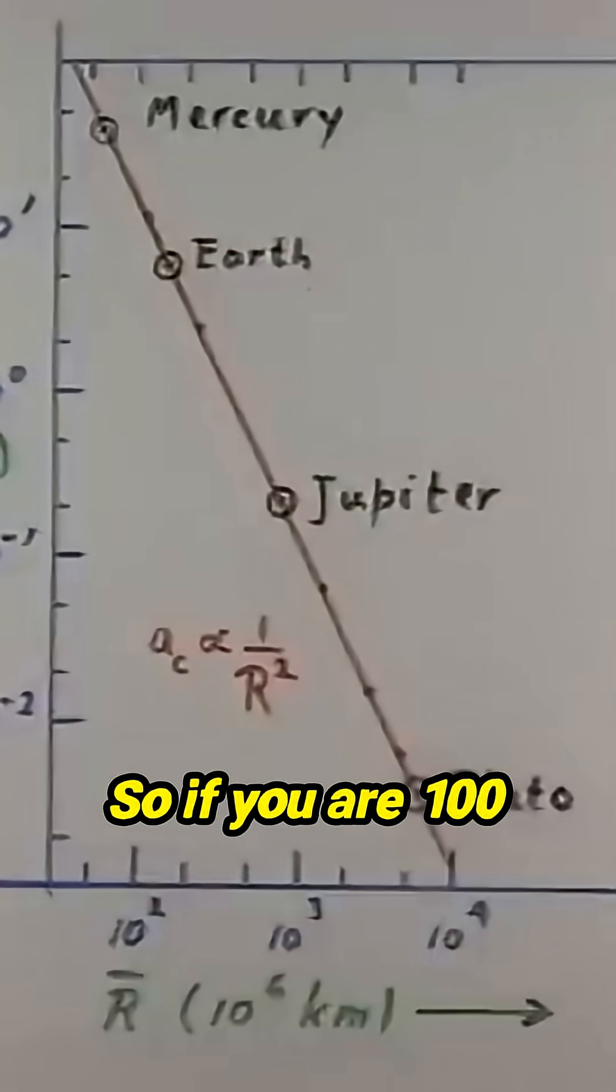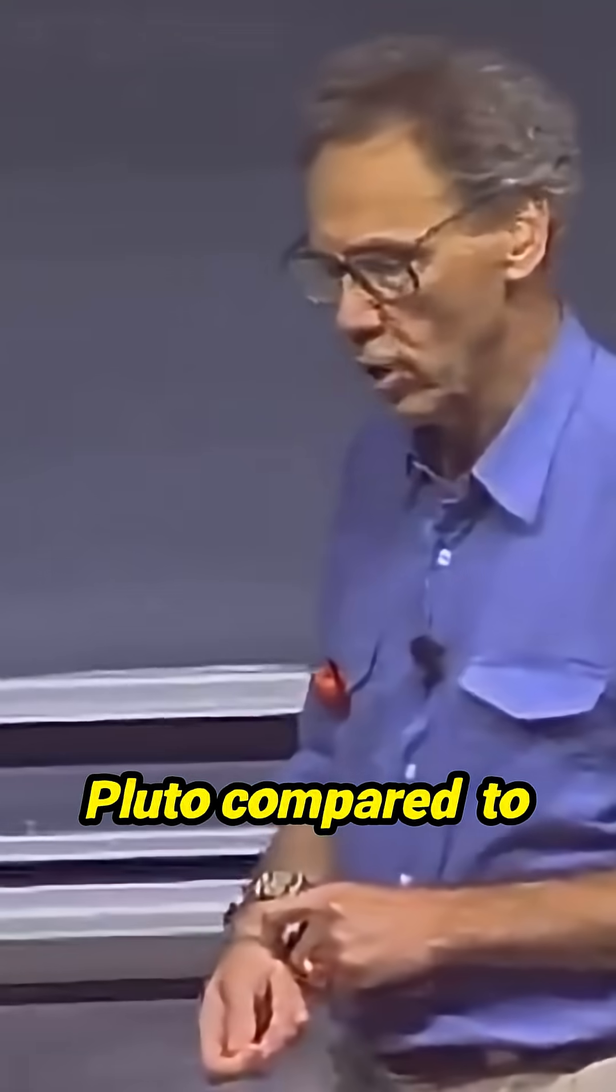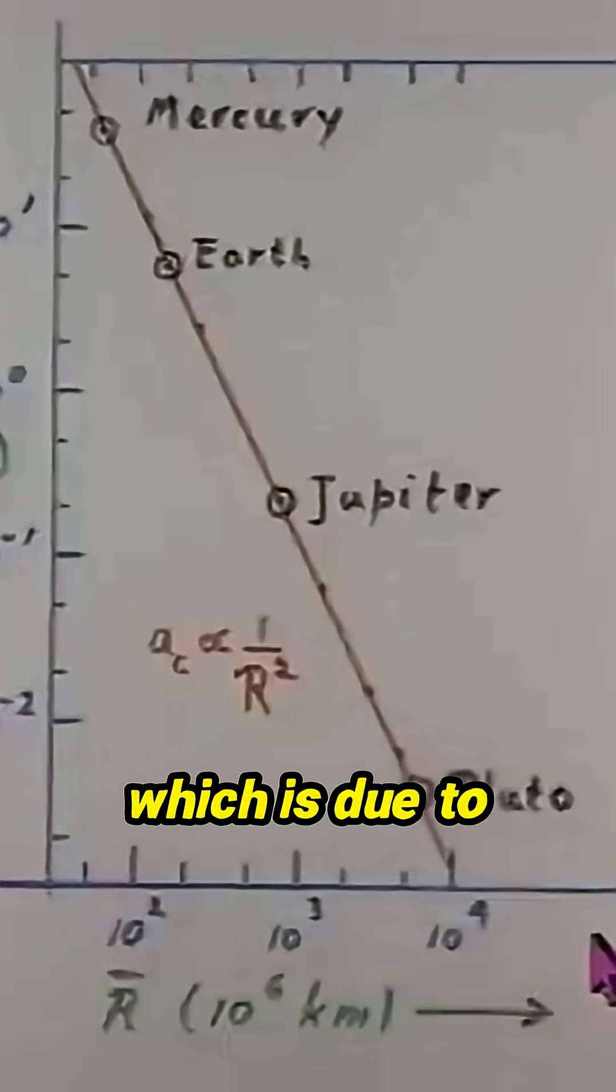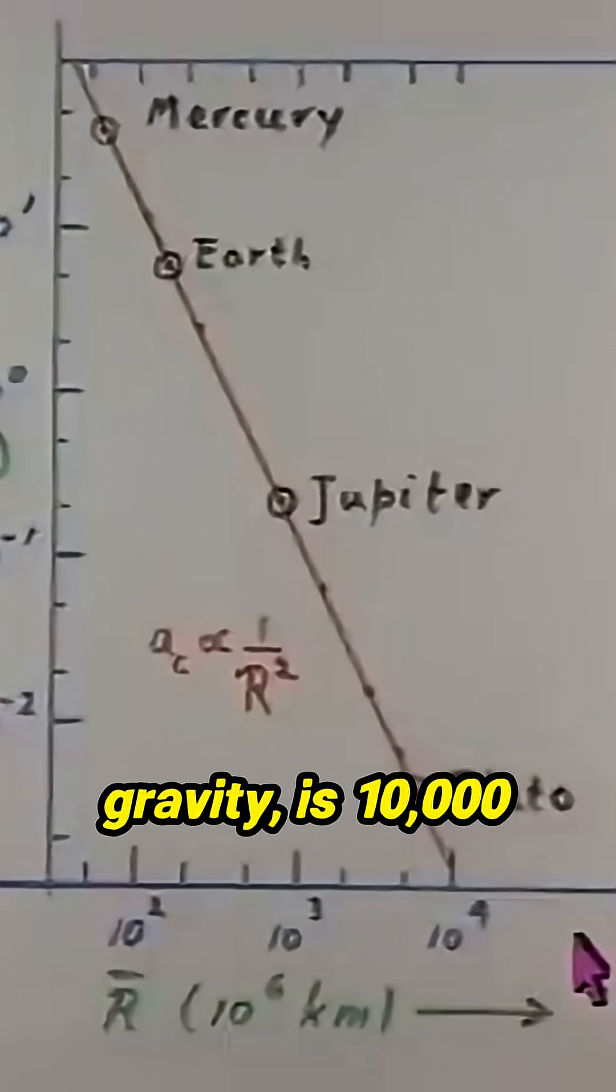So if you are 100 times further away, like Pluto compared to Mercury, the centripetal acceleration due to gravity is 10,000 times smaller.